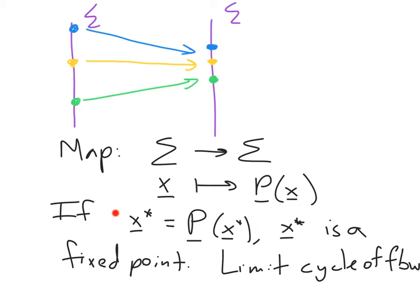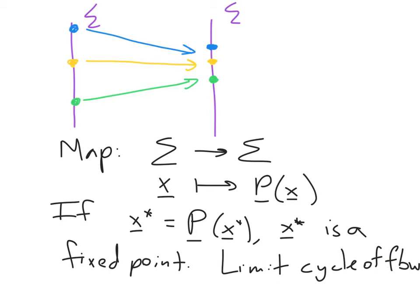And in addition, we can study this mapping to identify the stability of these limit cycles. To think about the stability of our limit cycle, we want to start at some point on sigma that's not so far from the point that corresponds to the limit cycle.